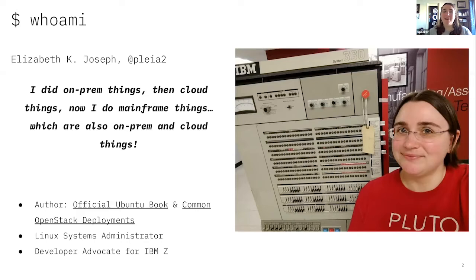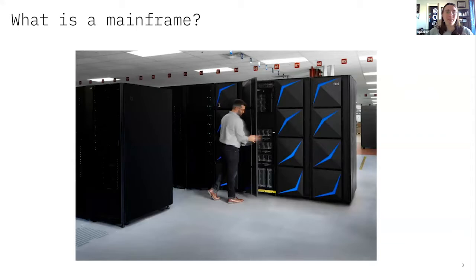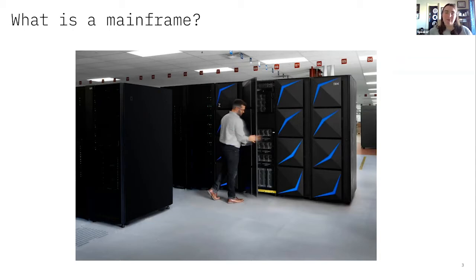I like to say I used to do on-prem things and I did cloud things, and now in the mainframe space it's very much both. When people get a mainframe installed, it's in their data center, but IBM Cloud also has mainframes for some of their secure services. These days mainframes sit in a standard 19-inch rack spot for their single-frame versions. This picture here is a four-frame Z-15, so it fits in four 19-inch rack spaces. You don't need a special place in your data center for these mainframes anymore.